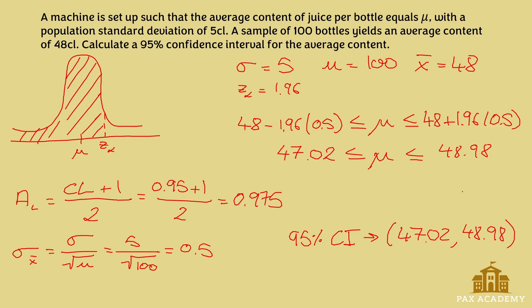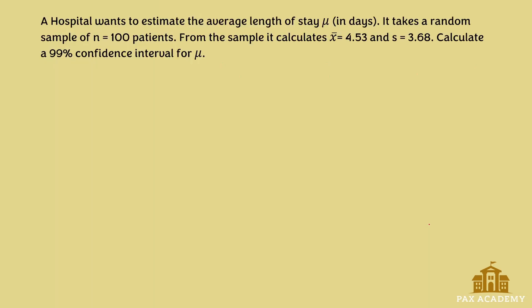If we put this into words, what this essentially means is that we're 95% confident that the population mean mu is somewhere between these two values. Let's look at another exercise.